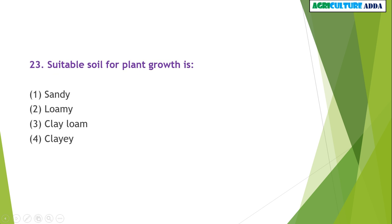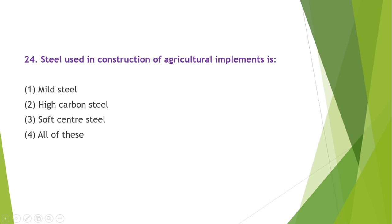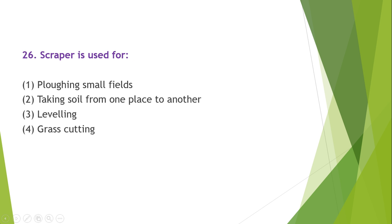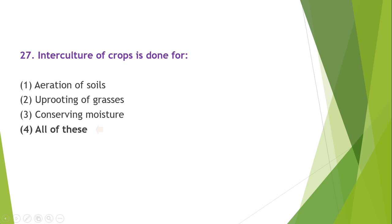The proper time to use Simazine for control of weeds in sugarcane is before germination. The suitable soil for plant growth is loamy soil. The steel used in construction of agricultural implements includes mild steel, high carbon steel, and soft center steel — all of these. Flow clearance is the distance under the beam to ground. Scraper is used for leveling. Interculture of crops is done for aeration of soils, uprooting of grasses, and conserving moisture — all of these.